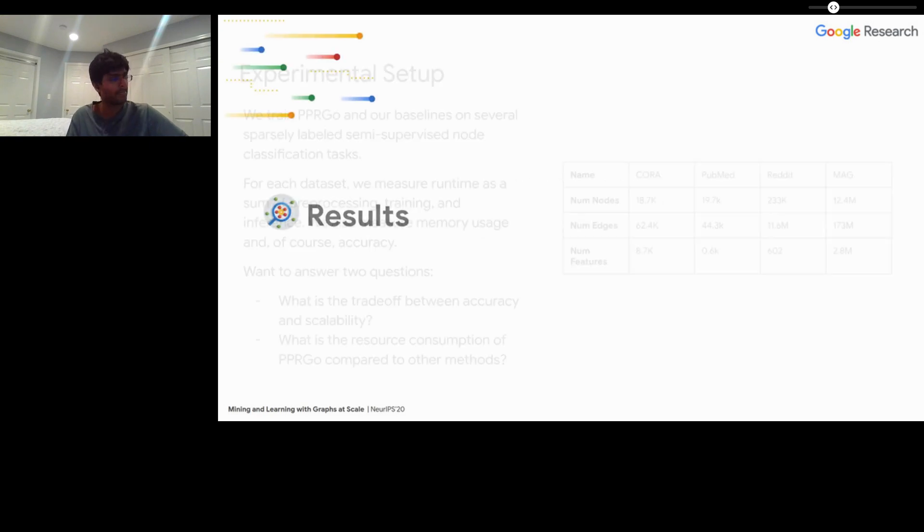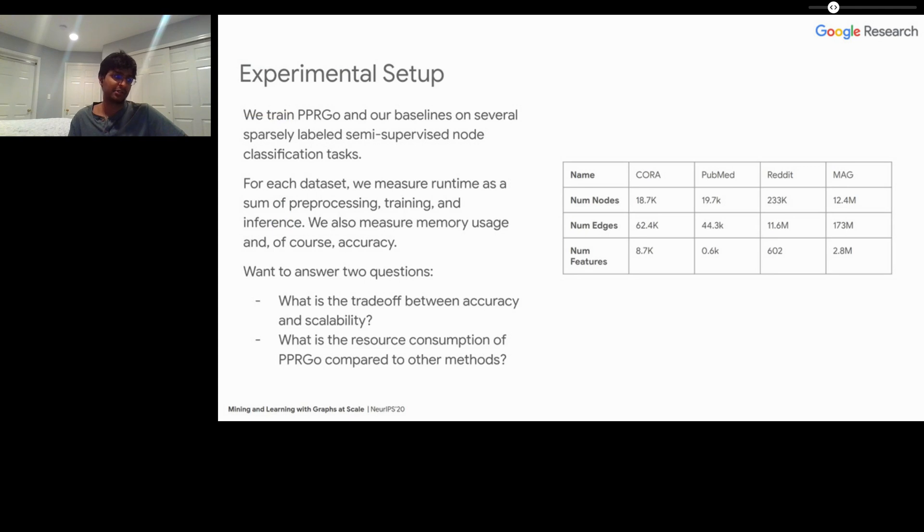So let's talk about some of the results. There are two key questions that we want to answer here. First, what was the trade off between accuracy and scalability? This is a really important question, because if it turns out that PPR Go just tanks the accuracy of a model, we might not want to use it, even if it ends up being really scalable. The second big question was, what was the resource consumption of PPR Go compared to other methods? To answer that, we measured the runtime as a sum of the preprocessing, the training and the inference, but then we also measured things like memory usage and, of course, the accuracy.